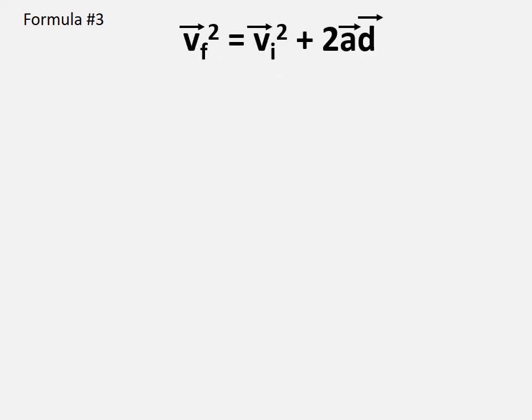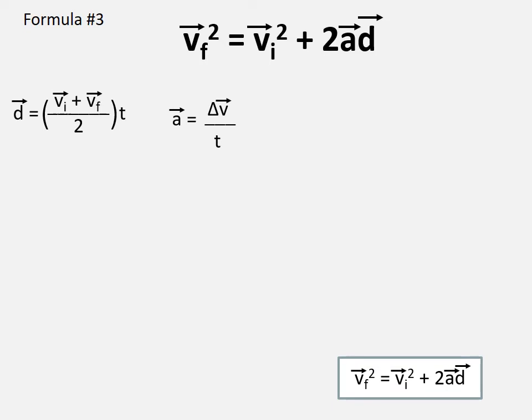We're going to prove that VF² = VI² + 2AD using two formulas we've already accepted: displacement equals average velocity multiplied by time, and acceleration equals change in velocity divided by time. Both formulas contain time, so we will isolate time to eliminate it, since time is not in the equation we want to prove.